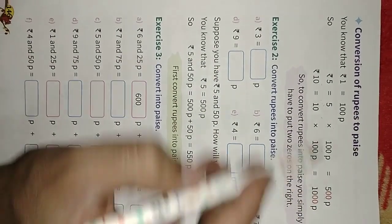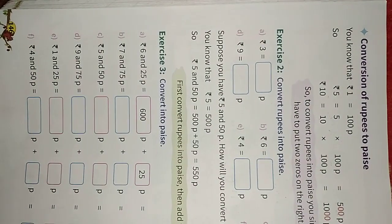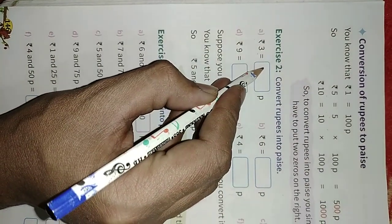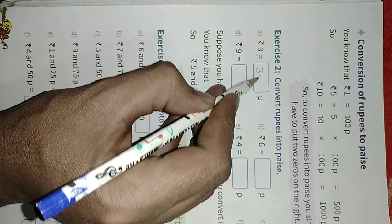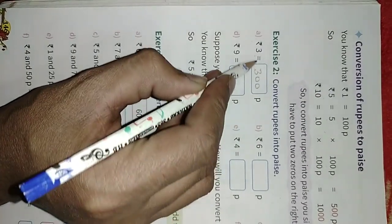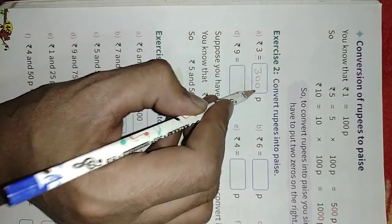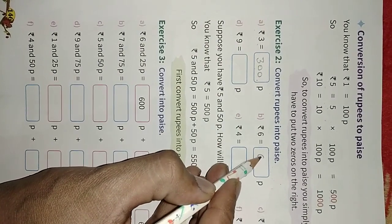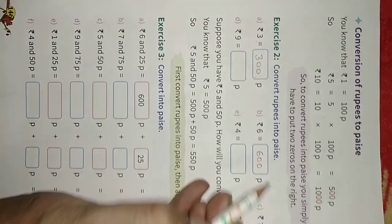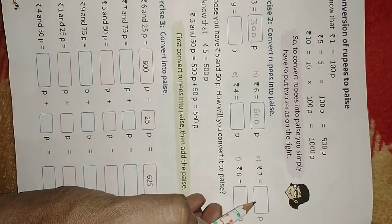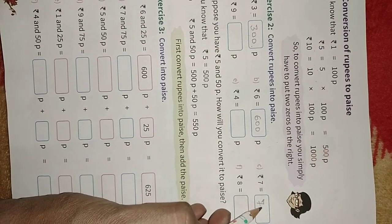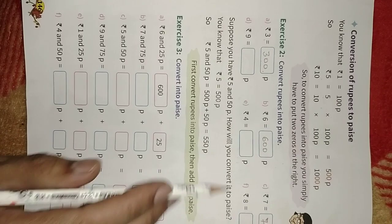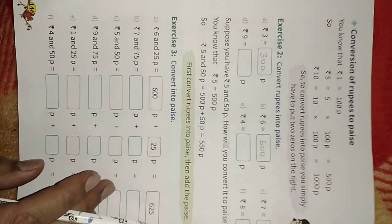So 1000 paisa. In exercise 2: 3 rupees is equal to 3 into 100, means 300 paisa. Just put 2 zeros after the number. 6 rupees means 600 paisa, 7 rupees means 700 paisa. This way you can do all parts.